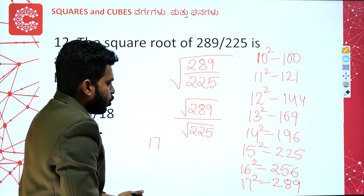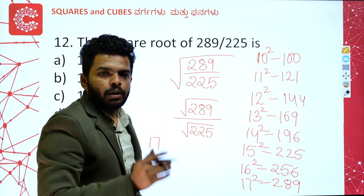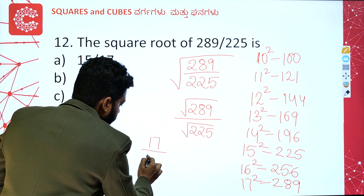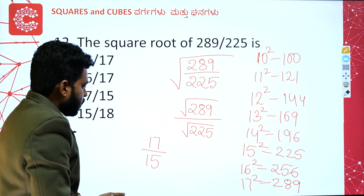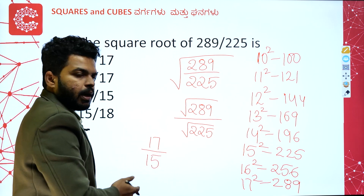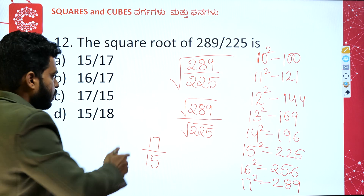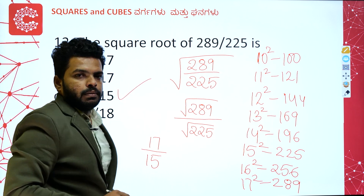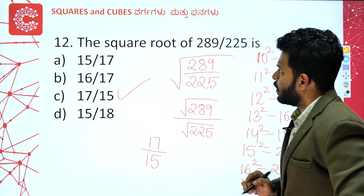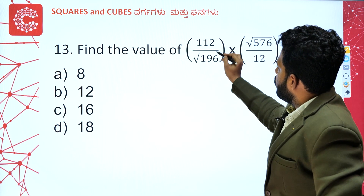So 289 is 17 squared, and 225 is 15 squared. The square root of 225 is 15. So they cancel — the answer is 17 divided by 15. Option C is the answer. Clear? Okay, next problem.